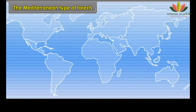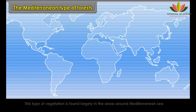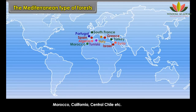The Mediterranean type of forest is found largely in areas around the Mediterranean Sea — in Spain, South France, Italy, Greece, Portugal, Syria, Israel, Turkey, Tunisia, Algeria, Morocco, California and Central Chile.